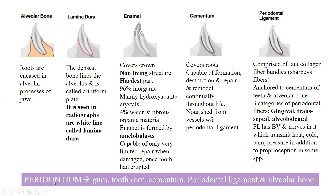The next term is periodontum. It is a generalized term that includes the gum, tooth root, cementum, periodontal ligament, and alveolar bone. These five things together are collectively called the periodontum. When we refer to periodontum, we are referring to all five of these structures together.